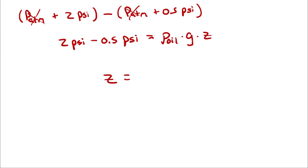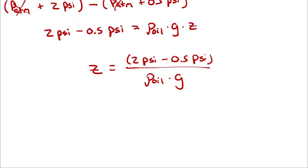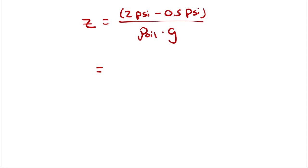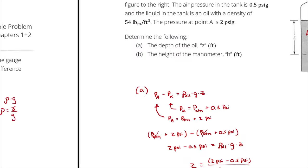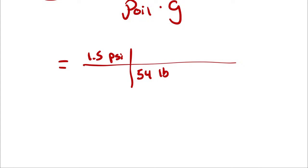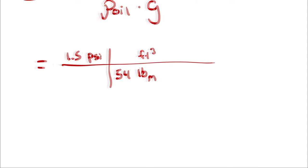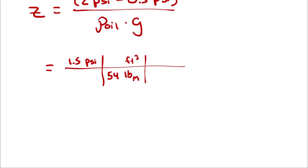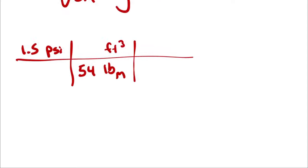So Z equals 2 psi minus 0.5 psi, which is 1.5 psi, divided by the density of oil times gravity. The density is 54 pounds of mass per cubic foot, and gravitational acceleration in imperial units is 32.2 feet per second squared. Since everything else in this calculation is imperial, it makes more sense to use 32.2 feet per second squared.